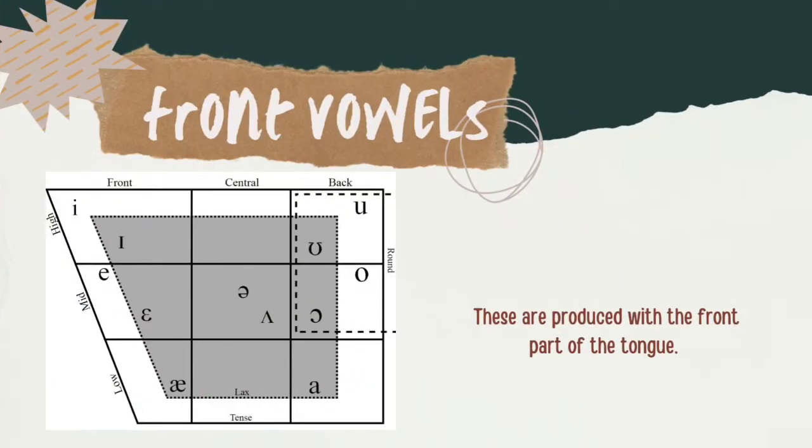Now we're going to talk about front, central, and back vowels. What do front, central, and back vowels mean? They refer to the part of the mouth where the tongue is raised highest, middle, or lower when a particular vowel is pronounced. So we're going to talk about the front vowels first. Check it out — the best way to explain the vowels is to show you a chart and give you an example.